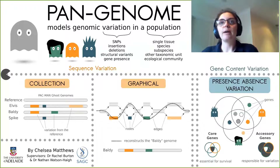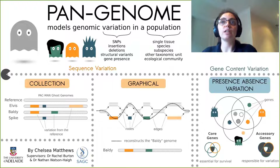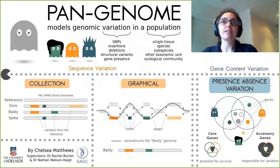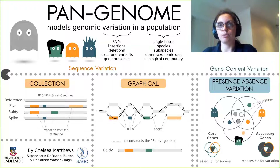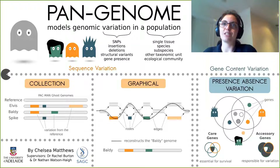Pangenomic models allow us to make use of genomic data from multiple members of a single population. Using a graphical pangenome in the place of a single linear reference assembly reduces bias in our analyses, and presence-absence variation pangenomes give us a unique insight into what makes a particular population or individual unique. This has been the briefest of introductions to what's a very broad and rapidly developing field, and I'd love to talk to you more about how we can build and use pangenomic models.